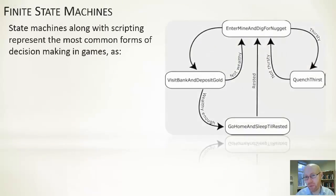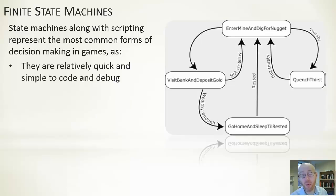You can make them a bit more sophisticated in terms of how they structure them. They're good, they fit into a lot of scenarios. You see another example there where we have a character that is either entering a mine and digging for a nugget. It may get thirsty, where it wants to quench its thirst. When it gets a nugget or sufficient number, it may want to visit the bank and deposit some money, or to go home and sleep until rested. In terms of FSMs, people use them because they're relatively quick to code, to debug. They're reasonably simple structures.